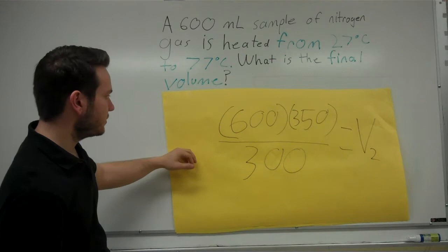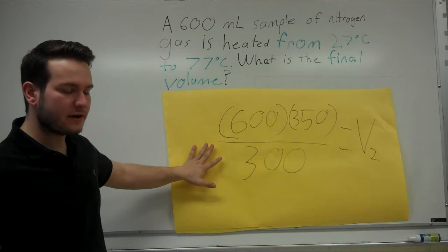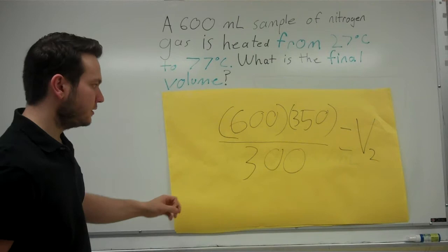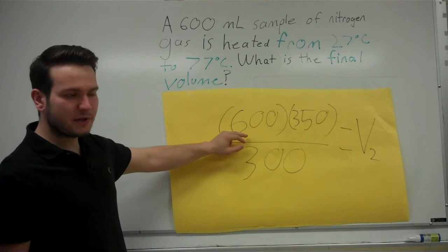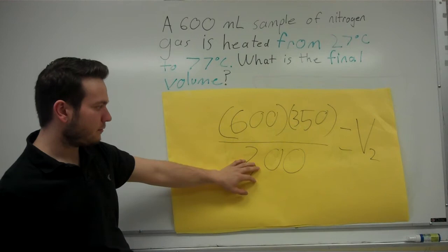Your third step is to rearrange the equation with all of your known values on the same side and your unknown values on their same side. So, when you rearrange this equation, you would multiply the 600 milliliters times the 350 degrees Kelvin and then divide that value by 300.